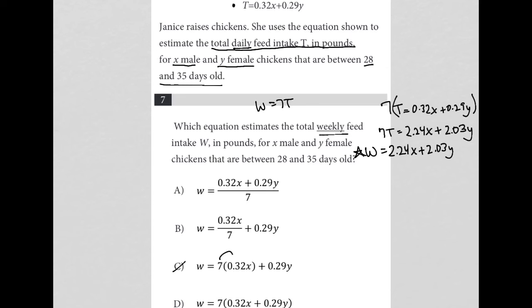For C, we're only multiplying 7 times 0.32, but we should multiply by 0.29 as well, so that's gone.